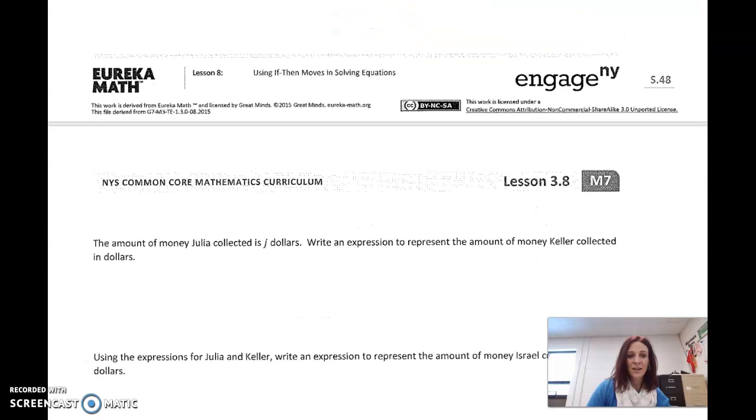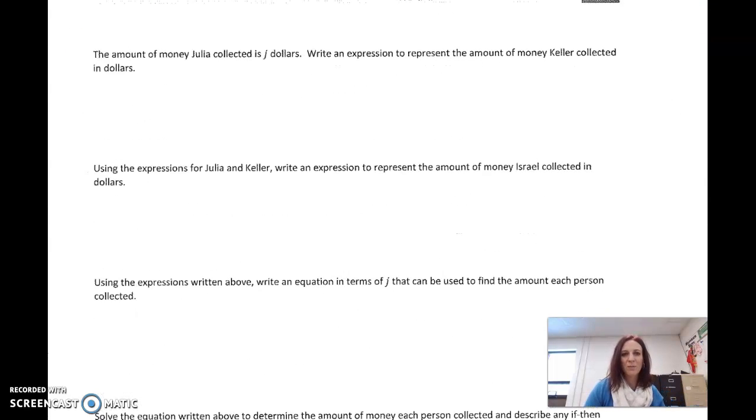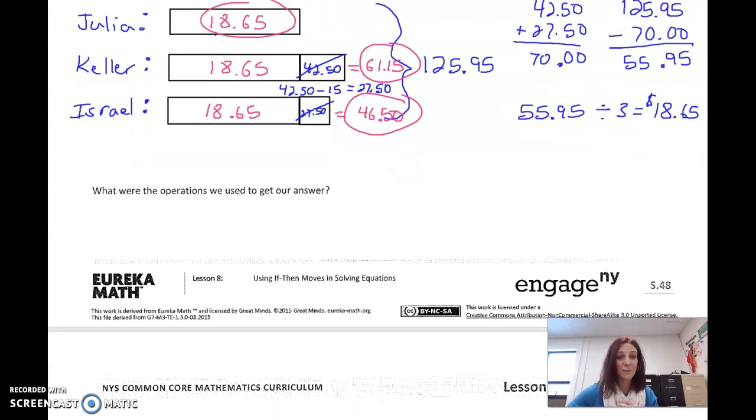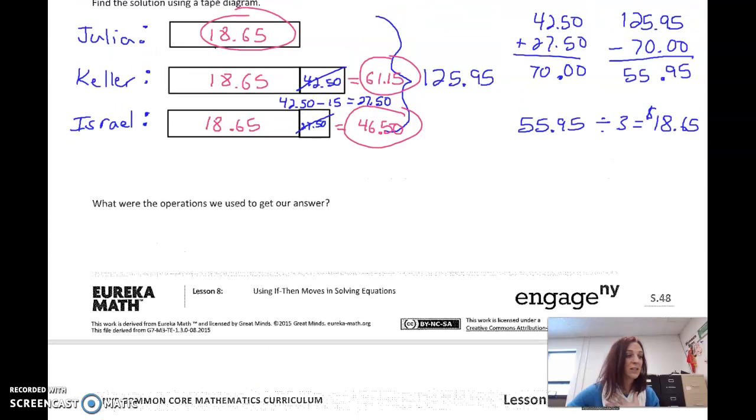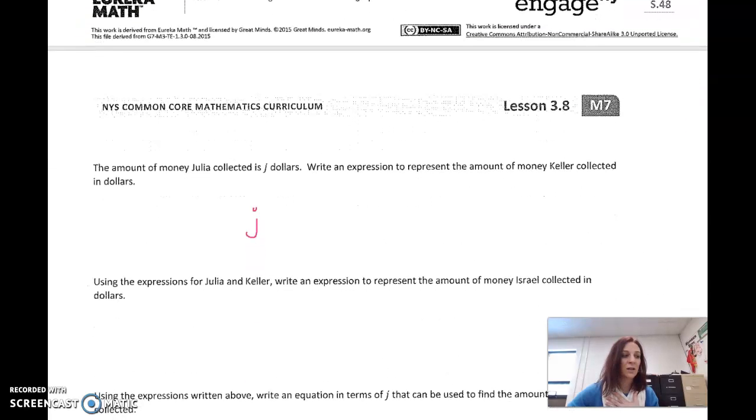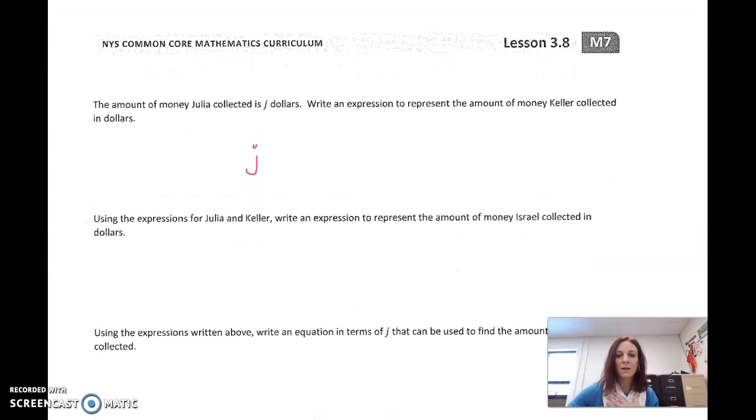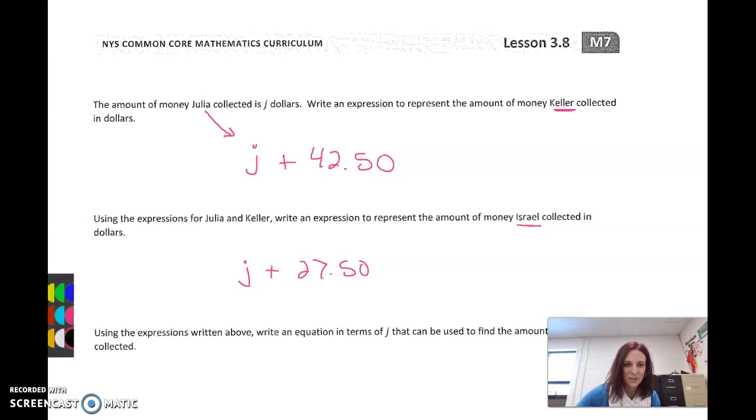The amount of money, there's the J comes in. Write an expression to represent the amount of money Keller collected. Well, you know what Keller collected? Julia collected J. Keller, then, if Julia collected J, Keller collected $42.50 more than that. Now, we want to do Israel here. Israel collected $27.50 more. And I'm going to put this above it. Remember, we added the $42.50 on, but then we subtracted the $15, and that's how we got that $27.50.